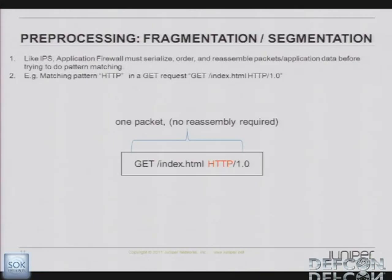Let's talk about pre-processing. We've discussed what application identification does — it's doing the pattern matching — but before we can do any pattern matching, there's quite a bit of pre-processing that has to be done. If you're doing any kind of evaluations or checking out this technology, this is a really important point. In some older routing code where they were doing pattern matching, they were doing no pre-processing. So if you just fragmented the traffic, or used TCP segments, or any kind of evasion, it wouldn't detect the application because it was just doing a simple dumb pattern match on the application traffic.